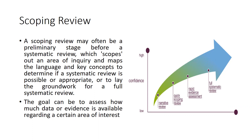The goal of a scoping review is to assess how much data or evidence is available regarding a certain area of interest. For example, suppose we have keywords that are only available in Hindi literature and not in English — we have to first identify what kind of language would be most available before doing a systematic literature review. You can see in the diagram: narrative review, quick scoping review, rapid evidence assessment, and full systematic review. Scoping review comes much earlier than the systematic review stage.